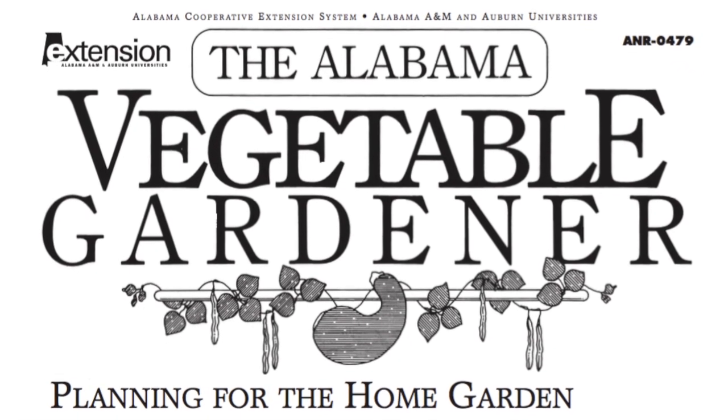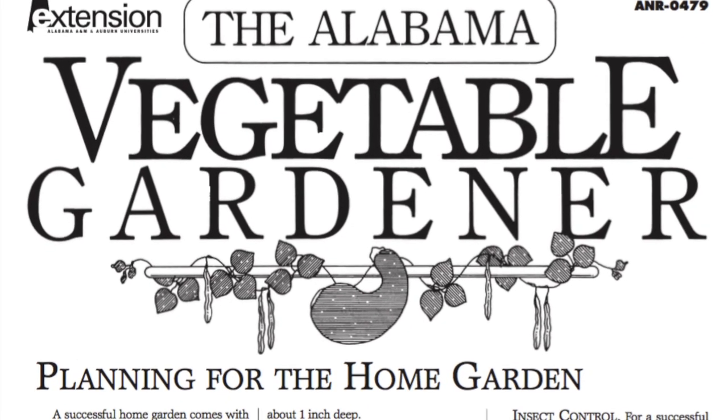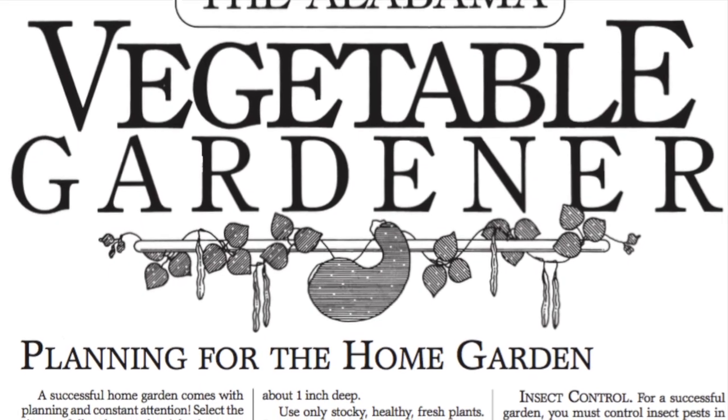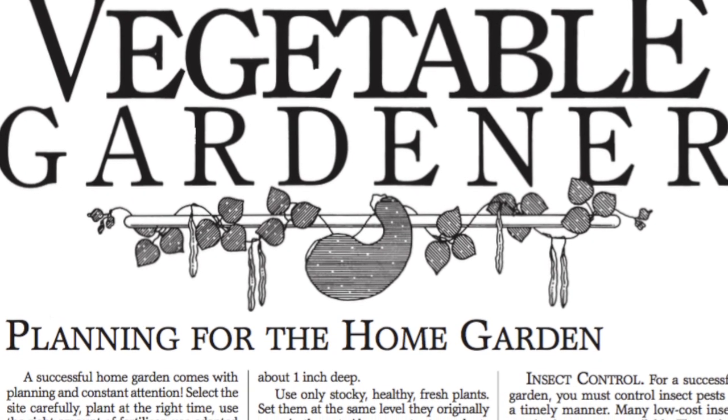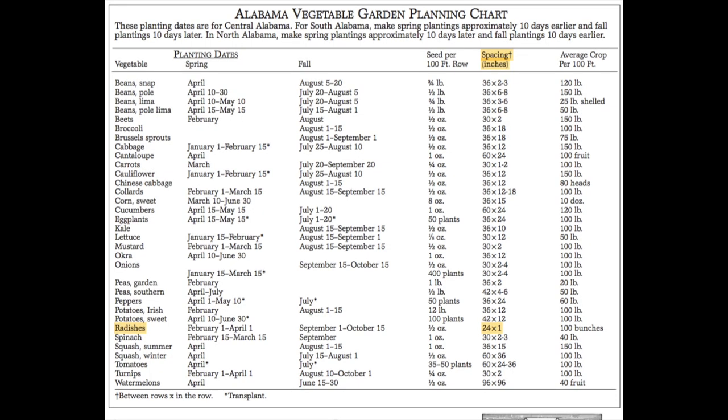Use Extension's Alabama Vegetable Gardener publication to determine the spacing needed for your seeds. The dimension provided is the spacing between the rows by the spacing in the rows. Focus on the spacing in the row.